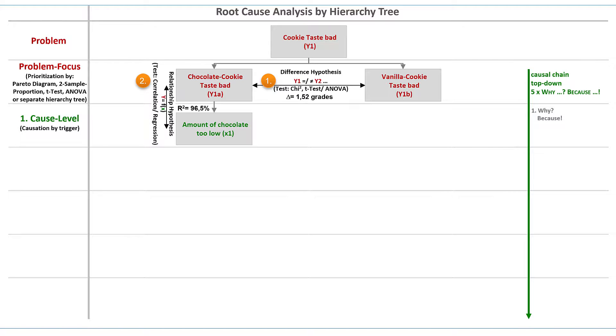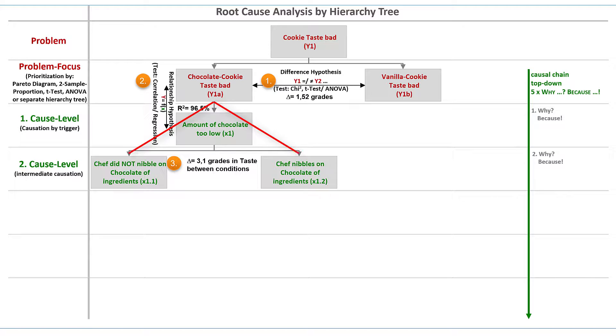To explain why the amount of chocolate varies between the cookies, I refer to the result of another t-test, showing that the taste ratings depend on whether our chef nibbles chocolate on the ingredients or not. One expert doubts this conclusion, because the t-test is not related to the difference in the amount of chocolate between the conditions. It could also be that the chef always only nibbles very small quantities, but that the more important cause might be that the kitchen scale is wrongly calibrated. This is a legitimate objection, and the expert had already mentioned the negative influence of the scale in the process analysis.